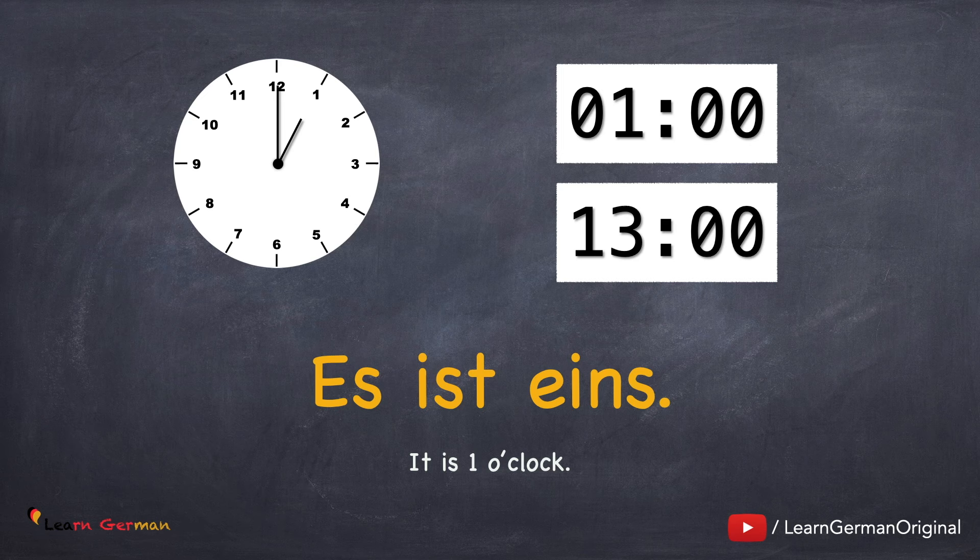Es ist eins. Oder Es ist um eins. In der Umgangssprache, there is only one way to say the time, irrespective of whether it's written in the format of a 12-hour clock or a 24-hour clock. Let's do some more examples.